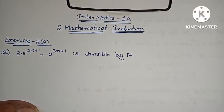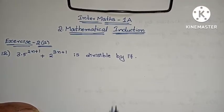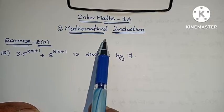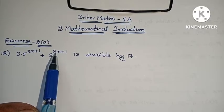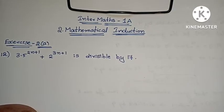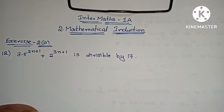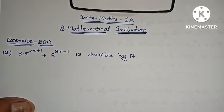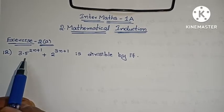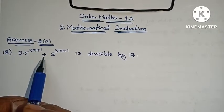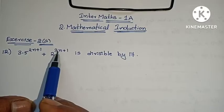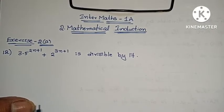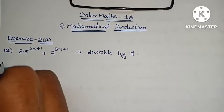Hello, hi, welcome to Parnika Maths. In Maths 1st year, 2nd chapter of Mathematical Induction. The 11th problem was already complete. In this video, the 12th problem question is to be solved. Question 1: 3 into 5 power 2n plus 1 plus 2 power 3n plus 1 is divisible by 17.